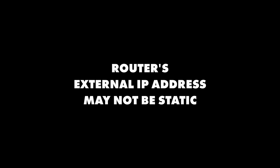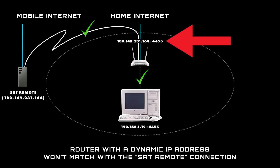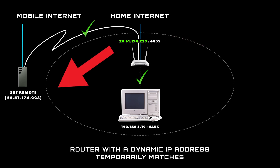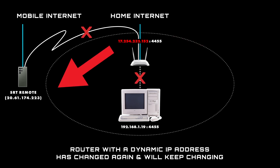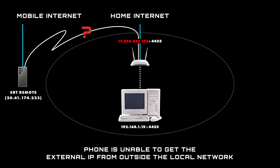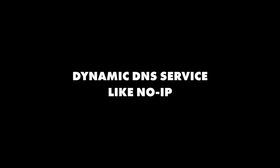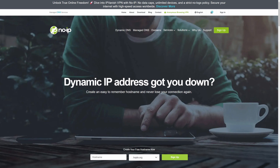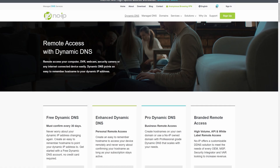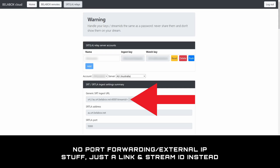The router's IP address may not be static. For this to work reliably, the router's external IP address cannot change. If it's dynamic, that means it'll keep changing — which could be every hour, every day, or whenever — meaning you have to keep updating the connection info in your IRL app, which is really impractical, especially if you're away from home. The easiest way around this is to ask your home internet provider if they can give you a static IP address. If that fails, look into a service like NoIP, who offer a free dynamic DNS you can use instead — I've covered NoIP in another video. Another option is Bellabox Cloud, where you can bypass all this port forwarding stuff altogether.